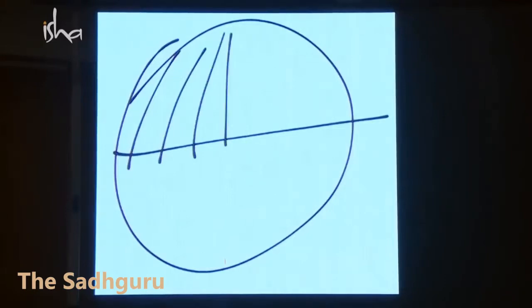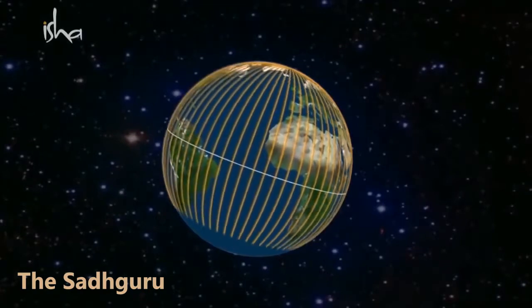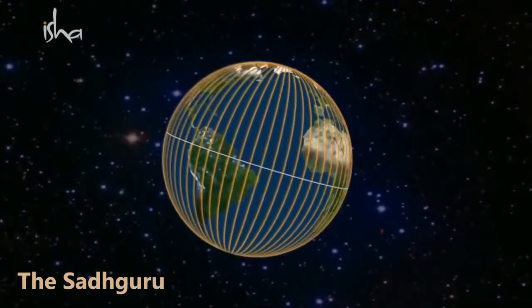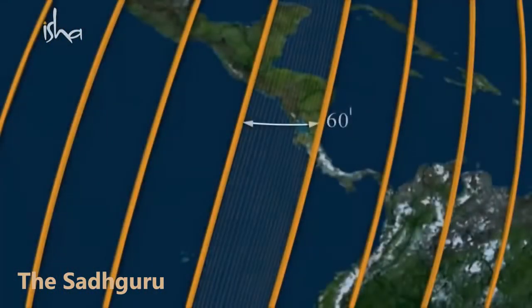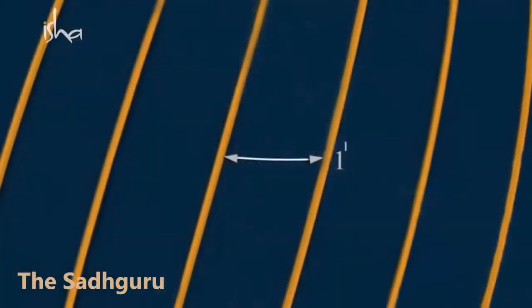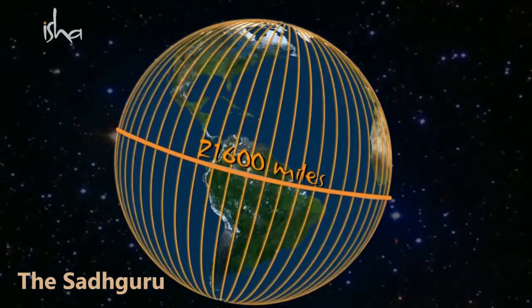If you take one degree, within it there are 60 minutes — referred to as arc minutes. These 60 minutes: that one arc minute accounts for one nautical mile. So that means the circumference of the Earth at the equator is 21,600 nautical miles — and that's exactly how many breaths you take per day.